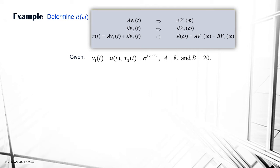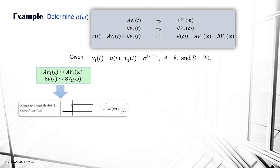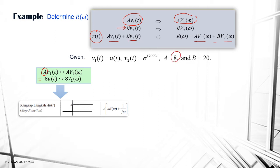Let's look at another example on linearity and superposition. Given v1(t), v2(t), and constants a and b: a·v1(t) produces a·V1(ω) in the frequency domain, and b·v2(t) produces b·V2(ω). A new signal r(t) as the superposition of both signals means R(ω) is the summation of both in the frequency domain. Given v1(t) = u(t), then a·v1(t) = 8·u(t), where a equals 8.